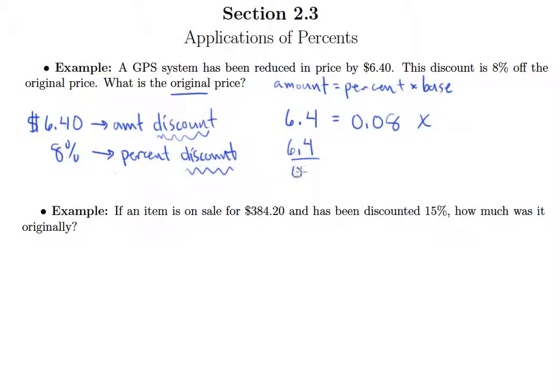Of course, divide both sides by 0.08, and so we've got 6.4 and we need to divide by 0.08. We'll move that decimal point to the right two places in each number, so the division problem that we really have to complete here is 640 divided by 8.